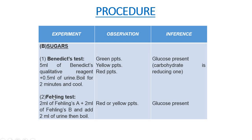The second test is the Fehling's test. We take 2 ml of Fehling's solution A and add 2 ml of Fehling's solution B, then add 2 ml of urine followed by boiling. If we observe a red or yellow precipitate in the test tube, then there is a presence of glucose in the urine sample.